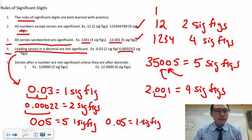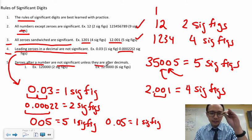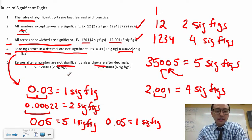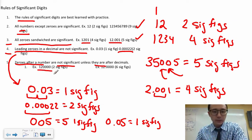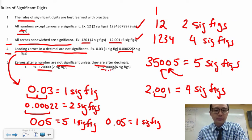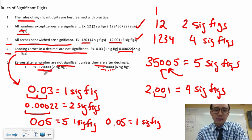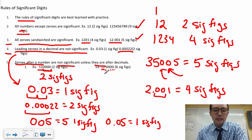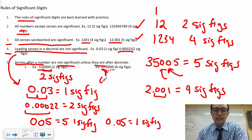Rule five: zeros after a number are not significant unless they come after a decimal point. For example, '120,000' has only two sig figs because the four trailing zeros have no decimal point. But '112.00000' — because there is a decimal point — those zeros count, giving six sig figs in total.